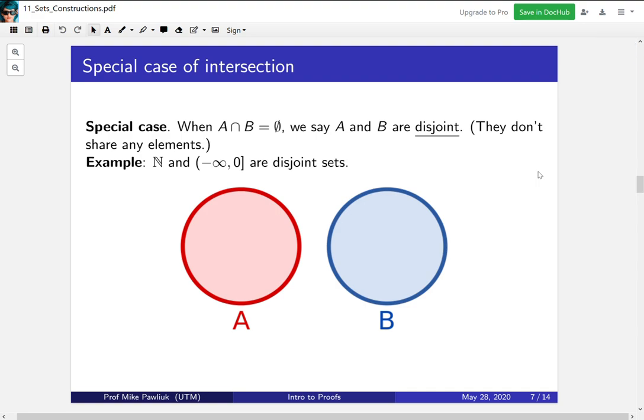One special case of intersection is when A intersect B is equal to the empty set. In this case we say that A and B are disjoint. This means they have no common elements or they don't share any elements. So for example the naturals and the closed ray minus infinity to 0 closed are disjoint sets. There's no numbers that are in both of them simultaneously.